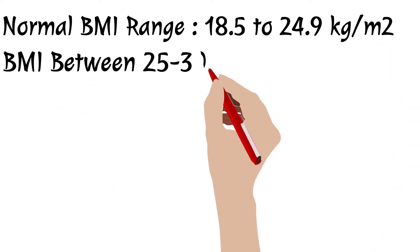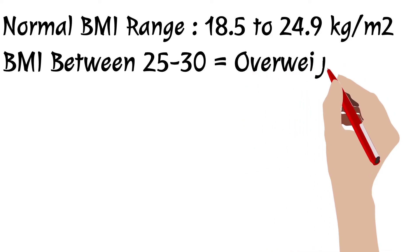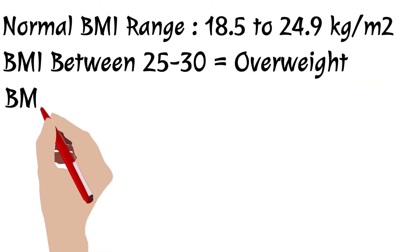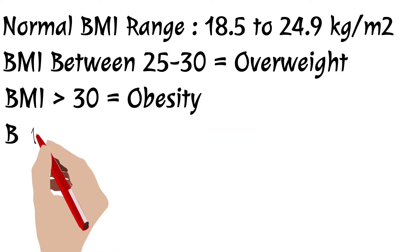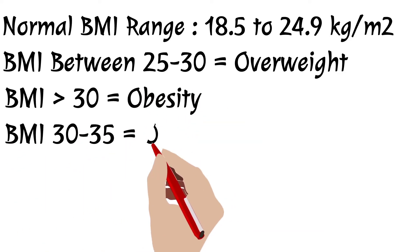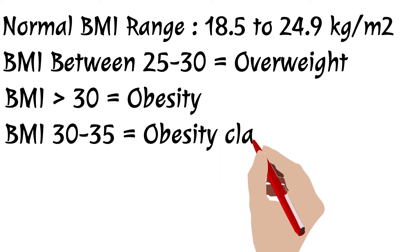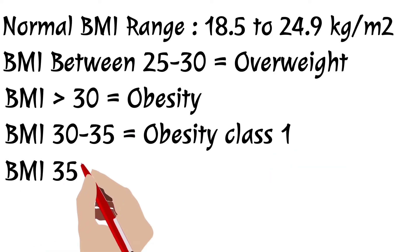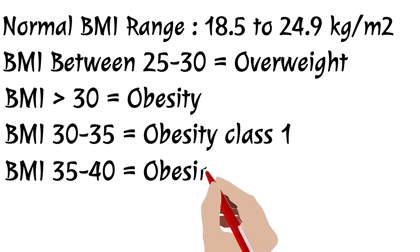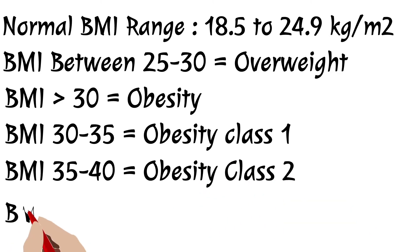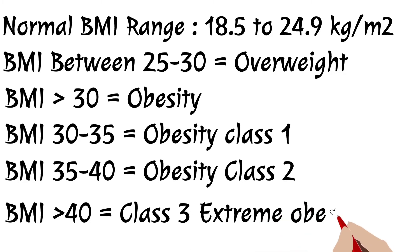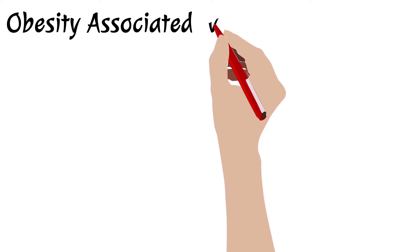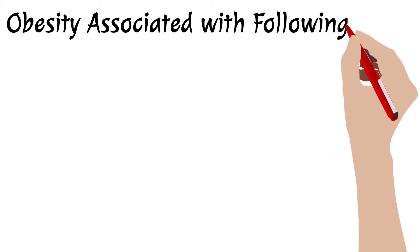The normal BMI range is 18.5 to 24.9. Between 25 and 30 is overweight. More than 30 kg/m² is obese. BMI 30–35 is obesity class 1, 35–40 is obesity class 2, and over 40 is extreme obesity, class 3. Based on these BMI values, obesity can be defined.